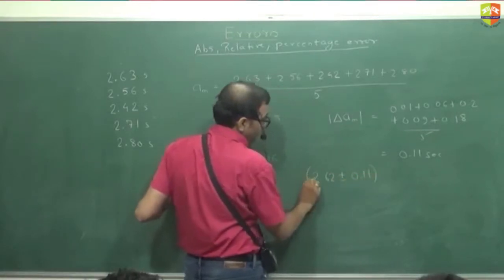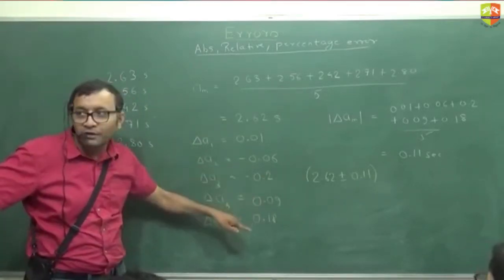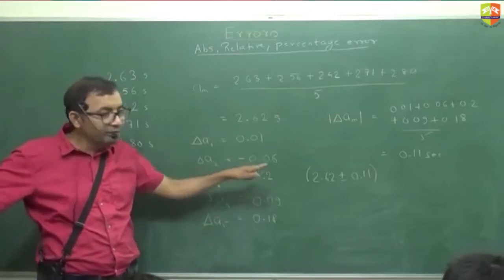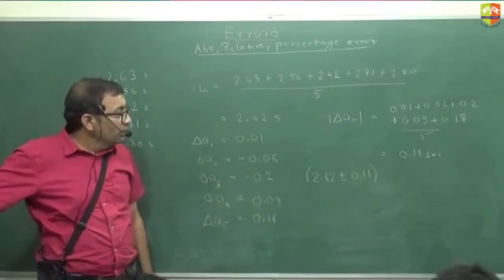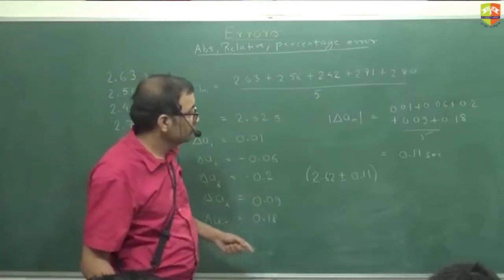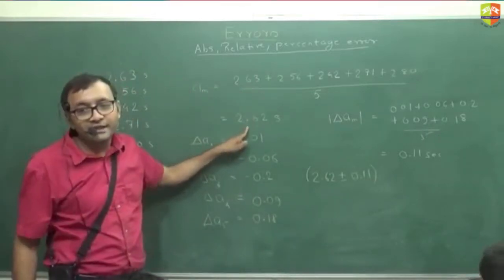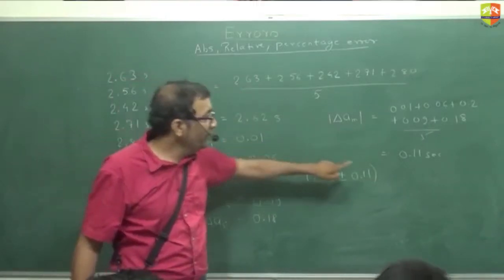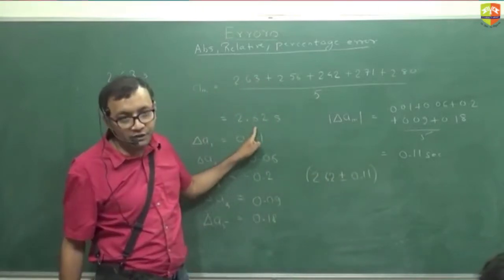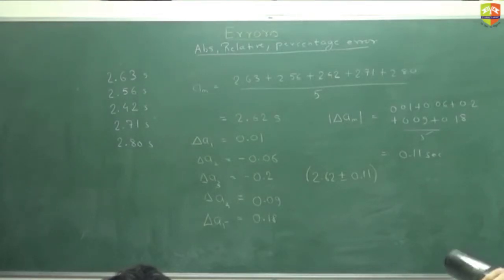This is the actual reading — this is how you should write it. It can be plus 0.11 or minus 0.11; your actual value lies between these two. This is the absolute error. For relative error: 0.11 divided by 2.62, which is 0.04. So percentage error is 4 percent.